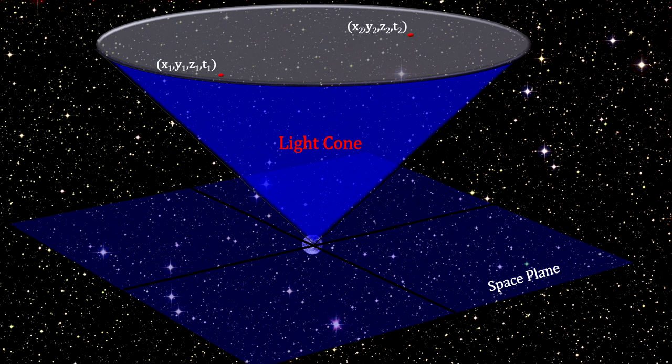Space-time inside the cone is called time-like because the length of connected points have positive proper time. This makes all points inside the light cone reachable.